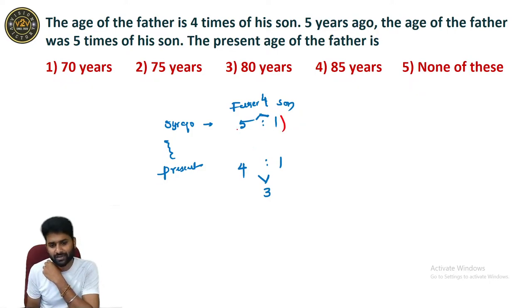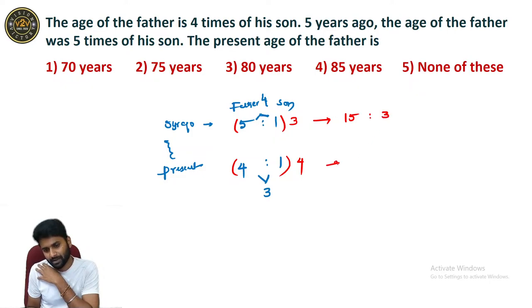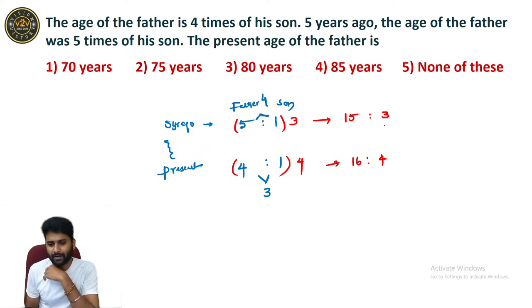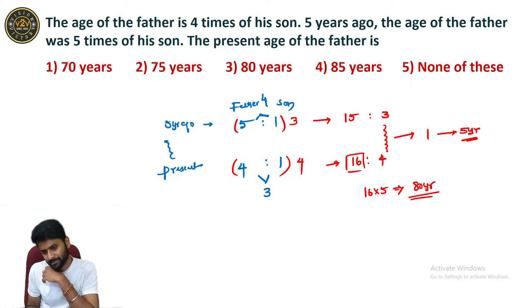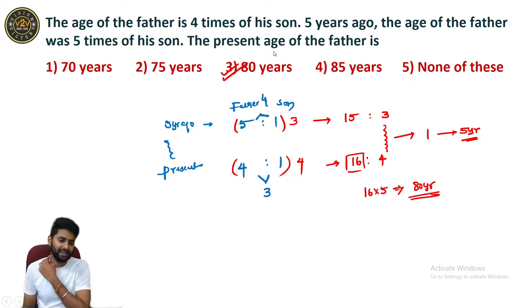Multiply the present ratio by 3 units and the past ratio by 4 units. You get 15 to 3 and 16 to 4. Now you can see a difference of 12 units. From present to past we have 5 years. The difference of 1 unit equals 5 years. The present age of father is 16 units. 16 × 5 = 80. Present age of father is 80.